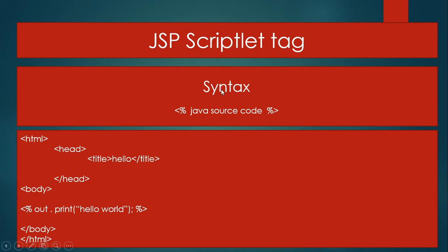Here I am discussing about the JSP scriptlet tag. The syntax of the scriptlet tag is: first you write the opening angle bracket, then percentage sign, then you simply write here the Java source code, and then percentage and then closing angle bracket. I am taking an example.